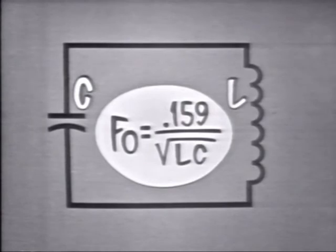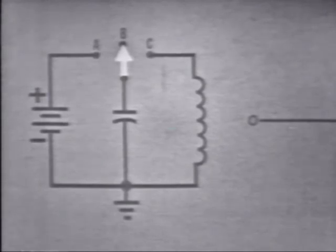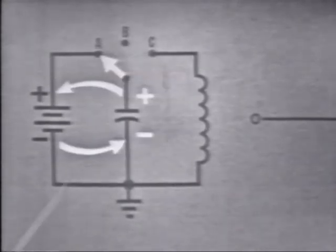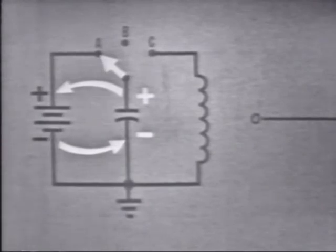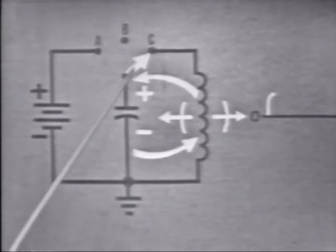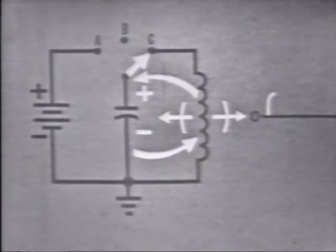To be sure you understand how this circuit will oscillate, let's follow the action step by step. First we'll need a power supply to provide the initial energy — in this case a battery. This switch will allow the capacitor to be connected to the battery or to the coil. If we flip the switch to A, the capacitor charges to the battery voltage. Moving the switch to B disconnects the capacitor from the power supply, though it is still fully charged. When the switch is moved to C, the capacitor will start to discharge through the coil, causing current to flow in this direction.